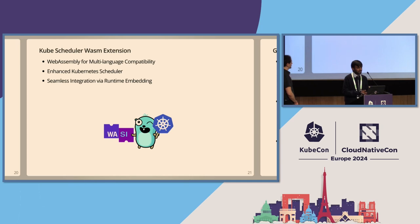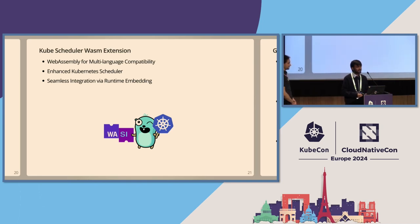Let me talk about another use case: the kube-scheduler WASM extension. WebAssembly enables executing code written in diverse languages in a secure environment. Its versatility allows developers to leverage existing codebases compiled to WASM for various purposes. Integrating WebAssembly into the kube-scheduler empowers extending kube-scheduler functionality through custom plugins compiled to WASM binaries. This approach enriches Kubernetes scheduling capabilities without needing to change the core implementation of the kube-scheduler.